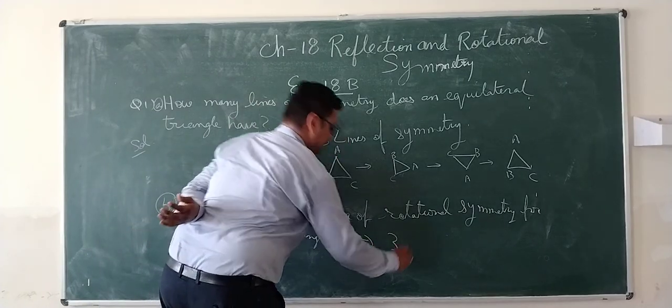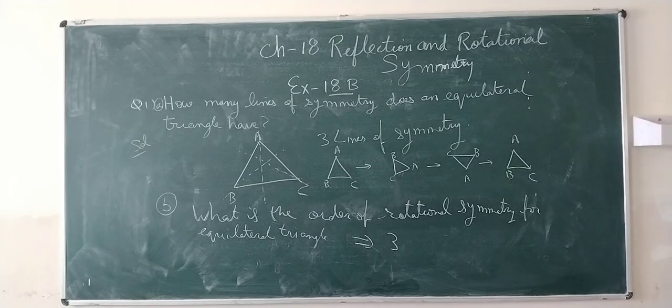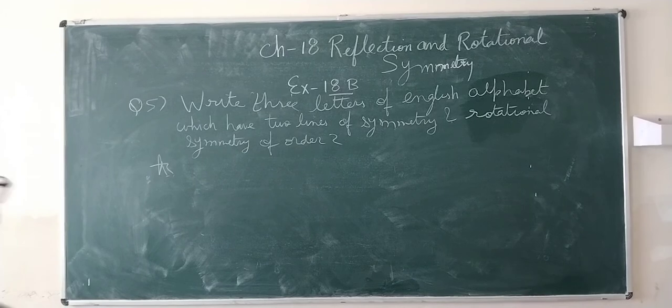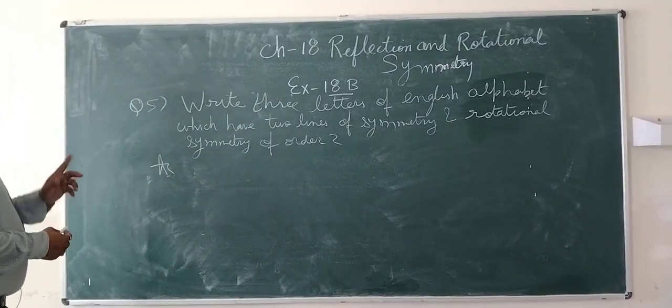Next: English alphabet letters which have two lines of symmetry and rotation symmetry of order 2.